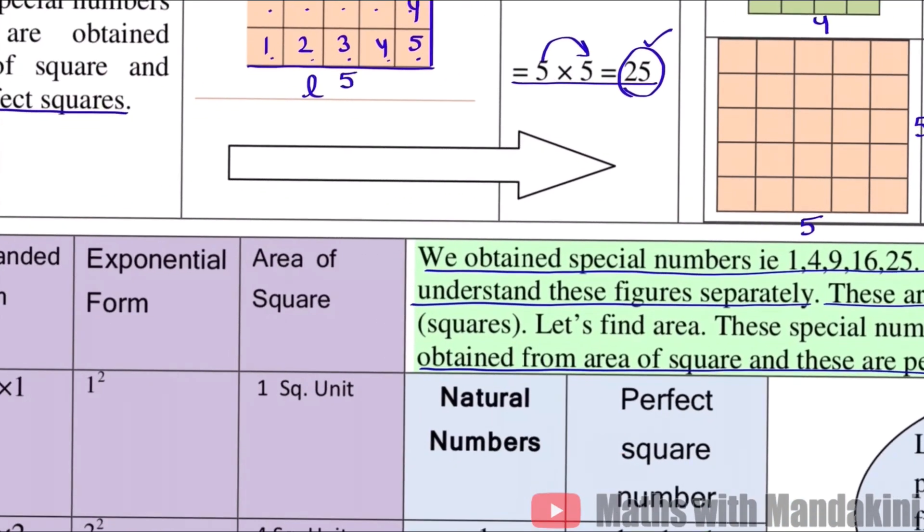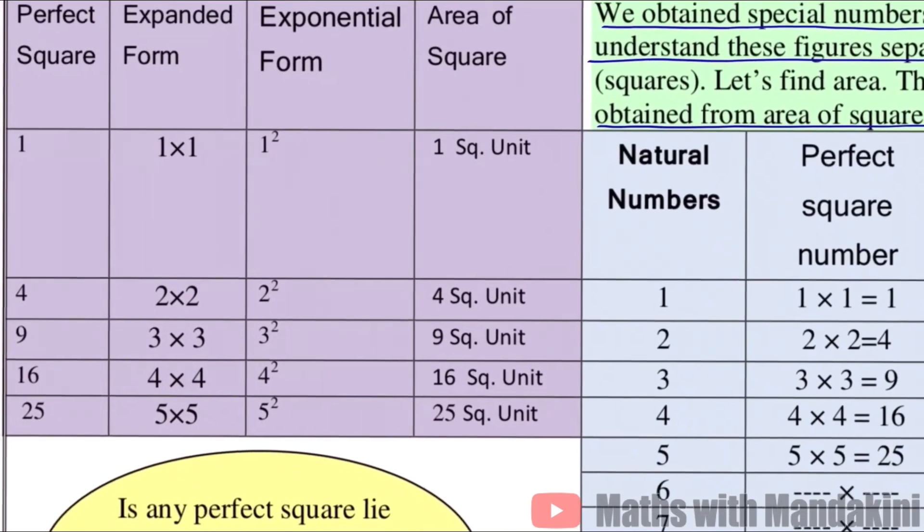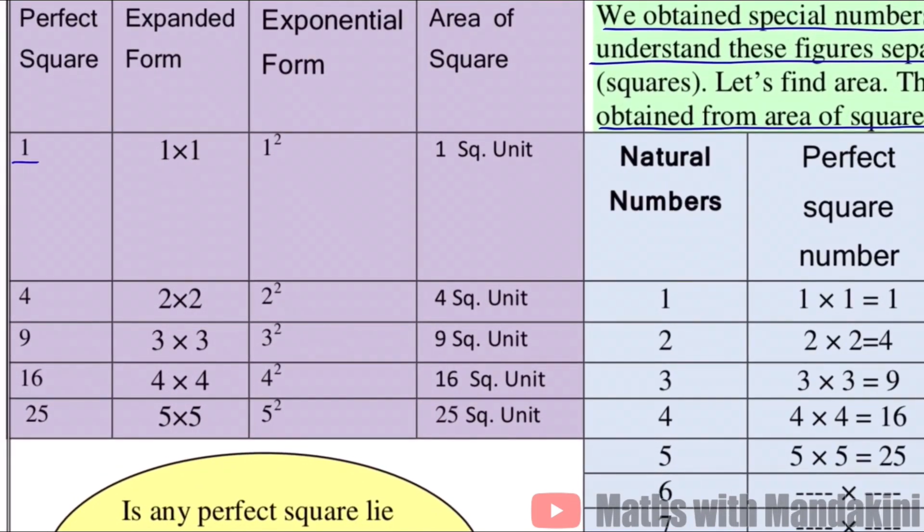Now let's see here how we represent this in exponential form. So our perfect square is 1. How did we get 1? When we multiplied 1 by 1, we multiplied 2 times. That means 1 power 2, so 1 square unit. 4, when do we get 4? When we multiply 2 with 2, same numbers. We multiply 2, that is 2 square, 4 square units. 9, 3 into 3, that is 3 square.